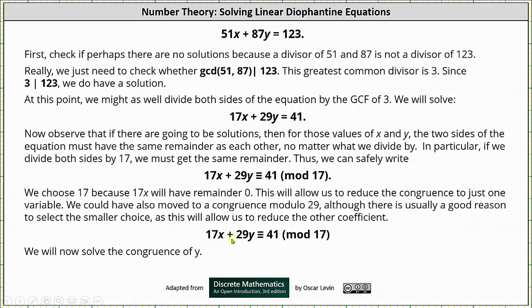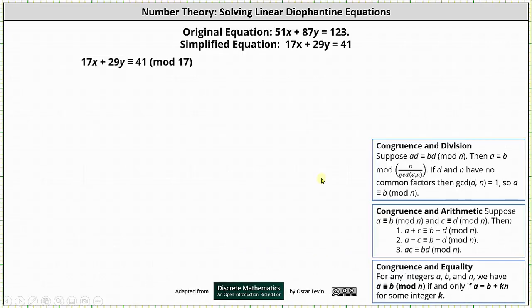So now that we have 17x + 29y ≡ 41 (mod 17), we will now solve the congruence for y. Let's do this on the next slide. So again, now that we have 17x + 29y ≡ 41 (mod 17), we can simplify the congruence by adding and subtracting multiples of 17.